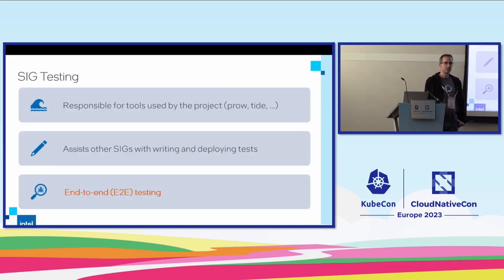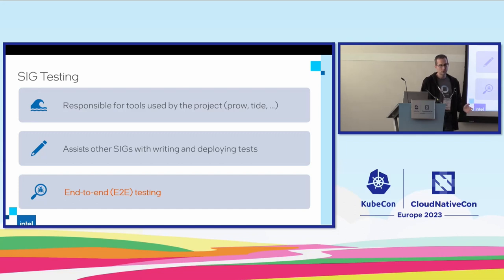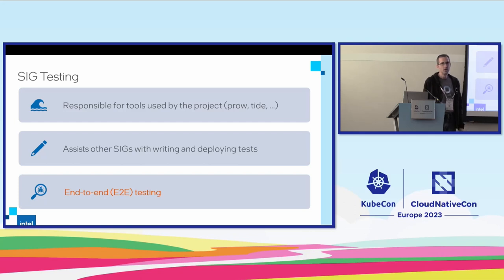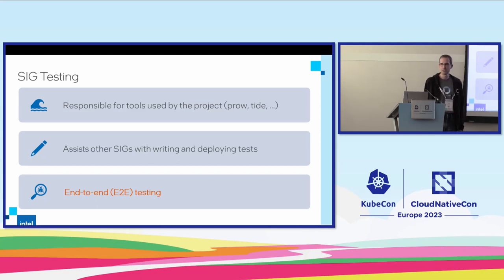Usually in these SIG updates someone goes through all the things that a SIG has done to inform the community. But I figured that with a lot of things landing very recently in end-to-end testing, I'll focus on just that aspect and make it hopefully interesting for you. Because that is also something that everyone who touches Kubernetes sooner or later needs to deal with, whether it's developing features, debugging something, or writing your own code and trying to figure out how to test that with a new Kubernetes cluster.